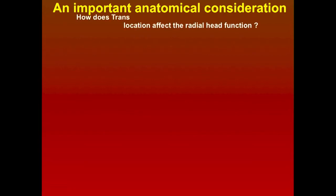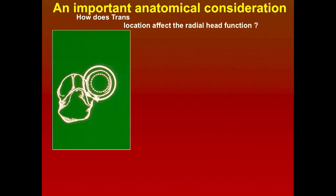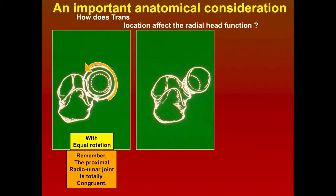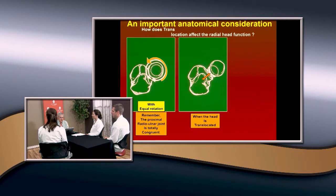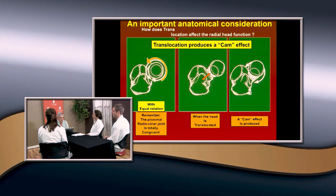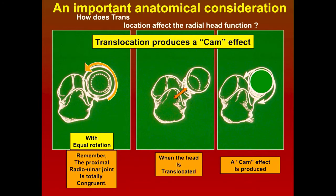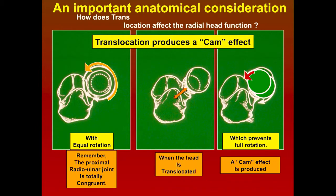There's another important anatomical consideration: how translocation affects radial head function. This is a very congruous joint, and when you do rotation you have full rotation because it fits perfectly — equal rotation in supination and pronation. But if you have a fracture and the head is translocated, this produces what's called the cam effect. It changes the axis of rotation, so it'll move a long way one way but be impinged in the other direction. You need to correct not only angulation but translocation as well.